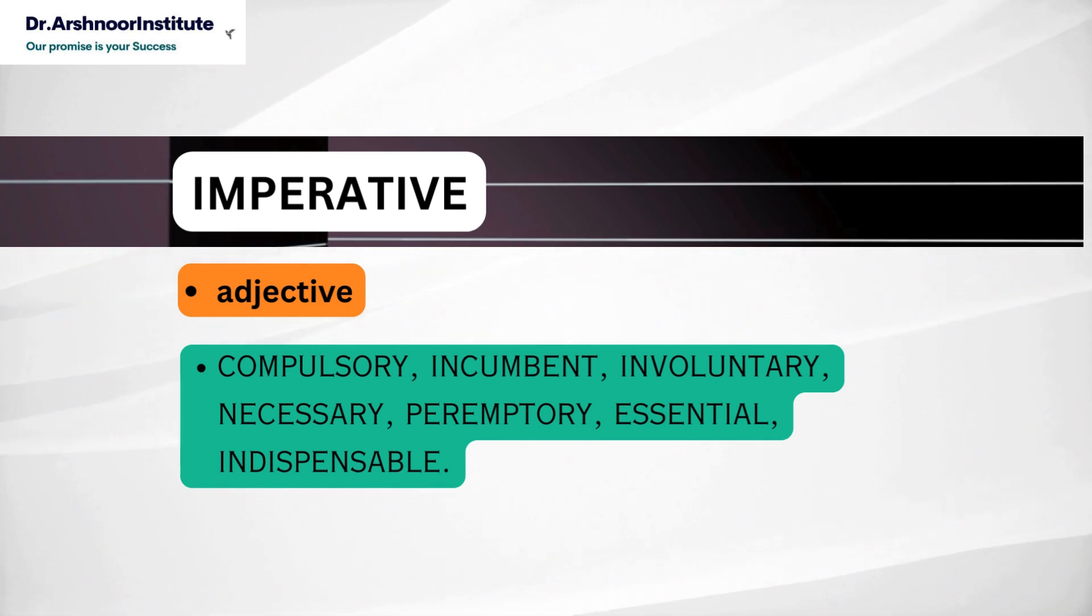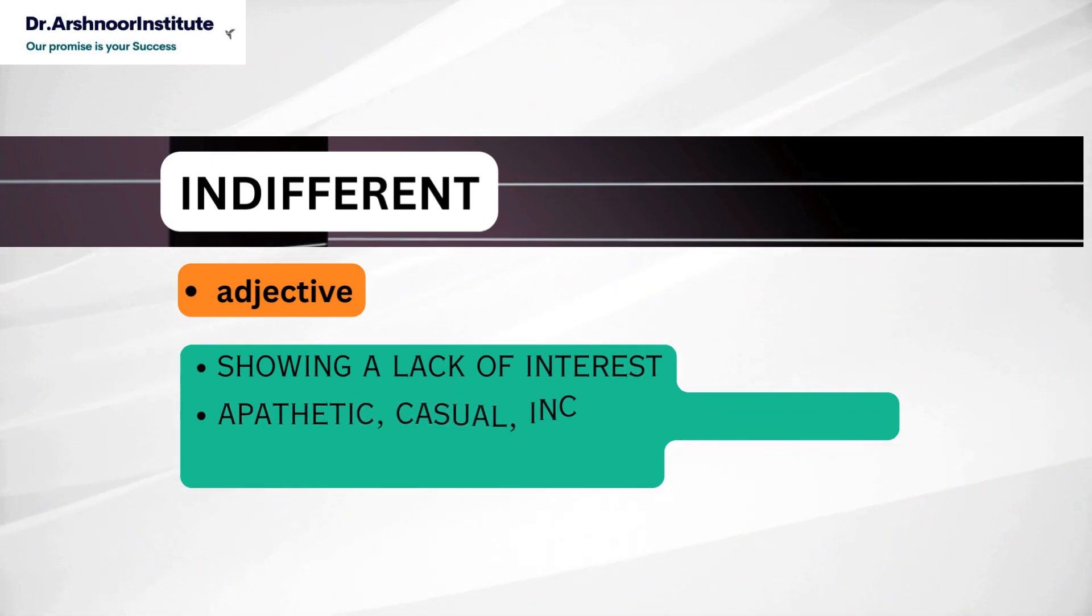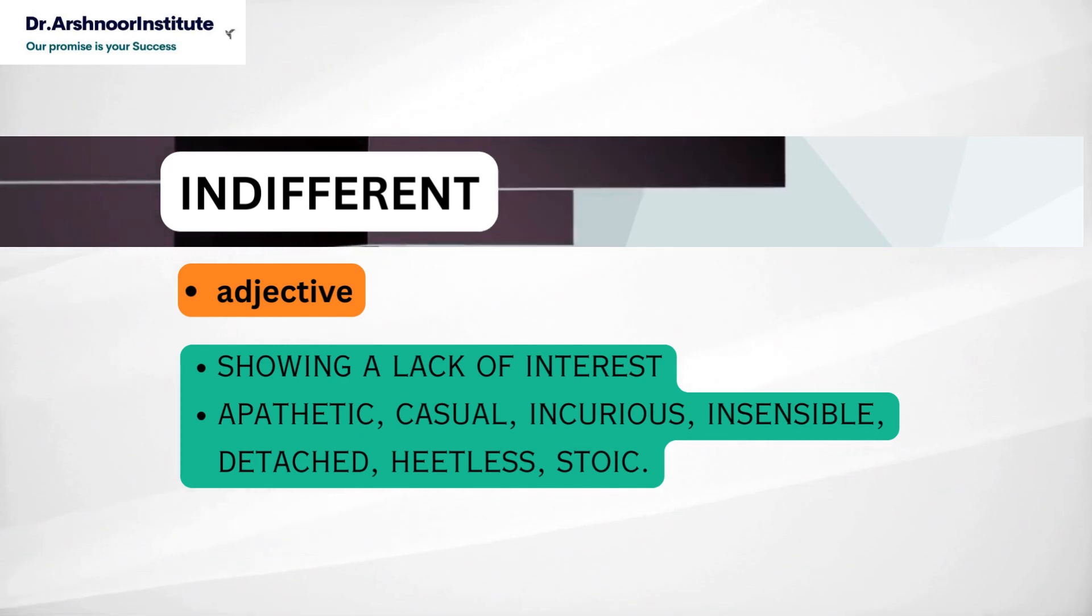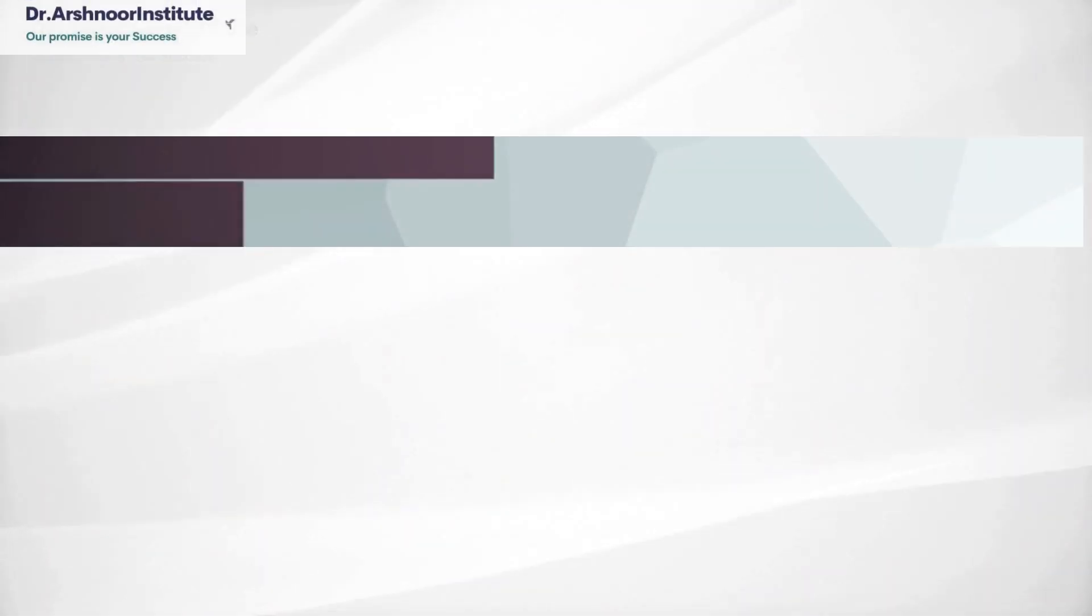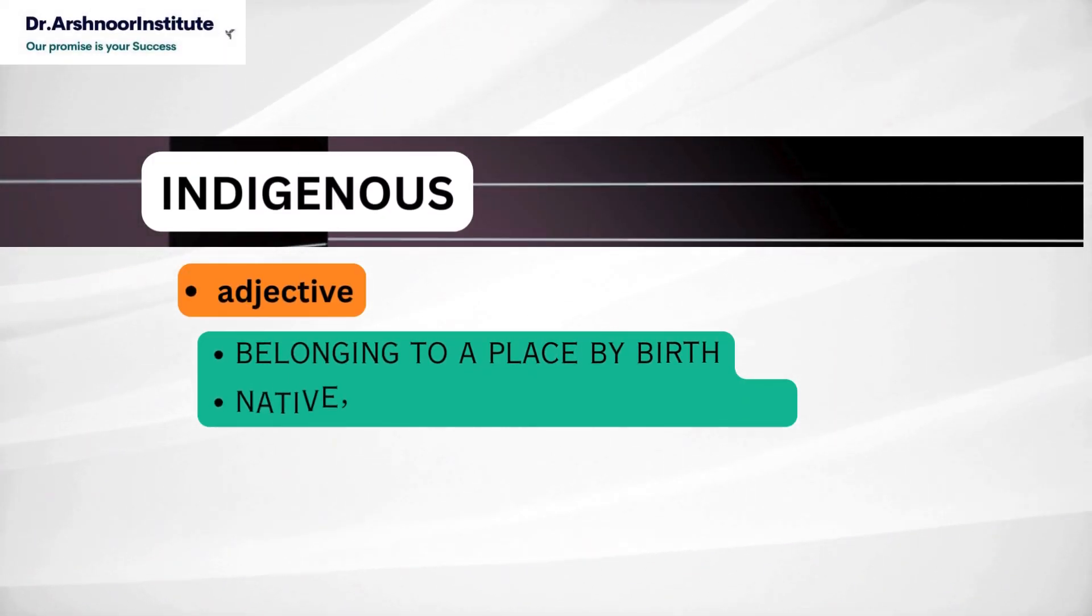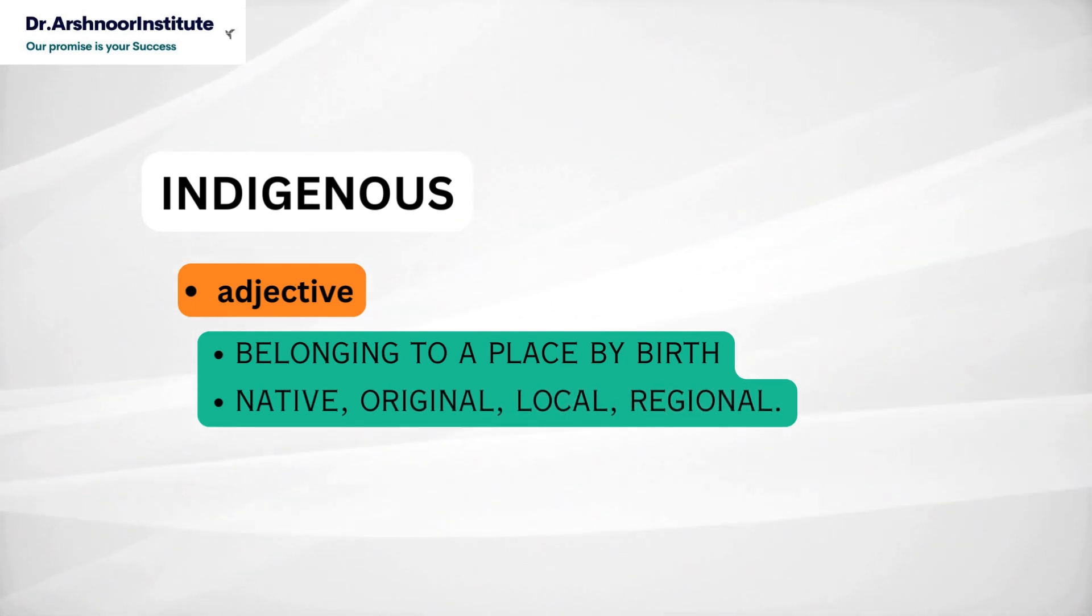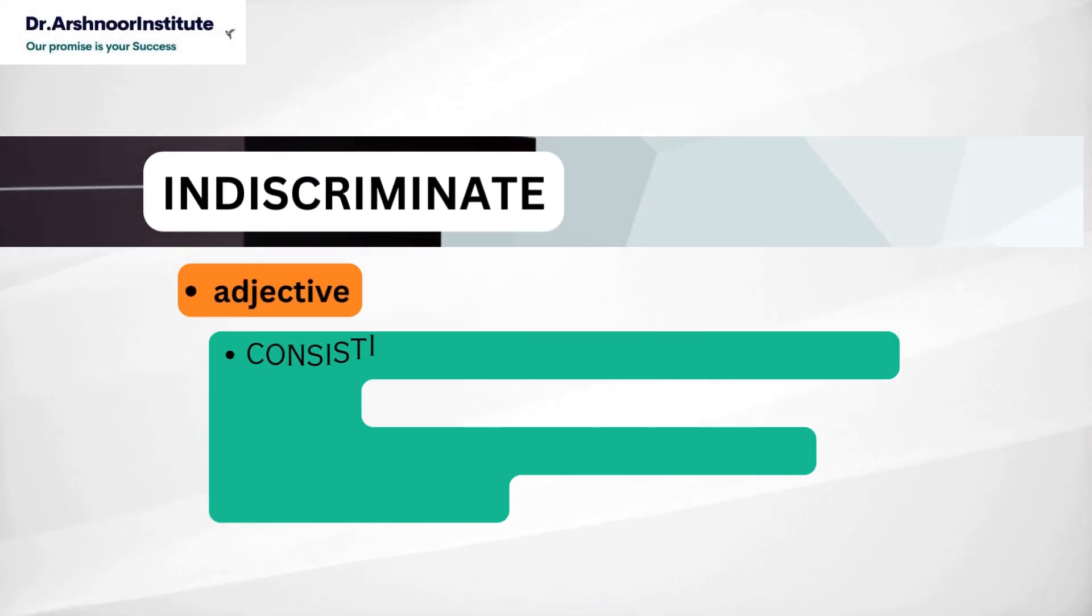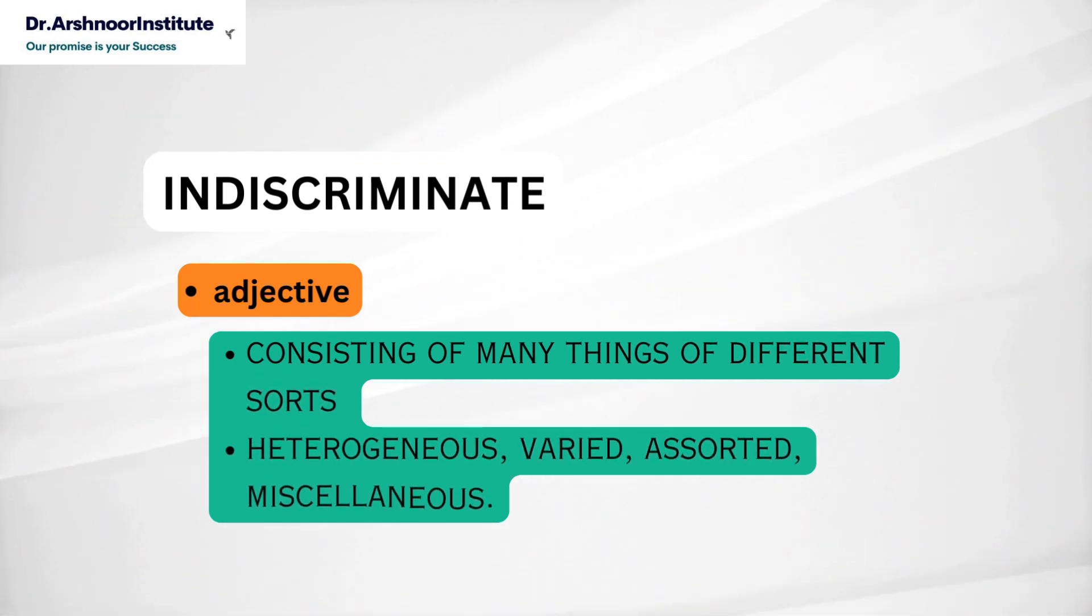Next word is indifferent. It's an adjective. It means showing a lack of interest and its synonyms are apathetic, casual, incurious, insensible, detached, heedless, stoic. Next word is indigenous. It's an adjective and it means belonging to a place by birth. It's native, original, local, regional. Next word is indiscriminate. It's an adjective and its meaning is consisting of many things of different sorts and its synonyms are heterogeneous, varied, assorted, miscellaneous.